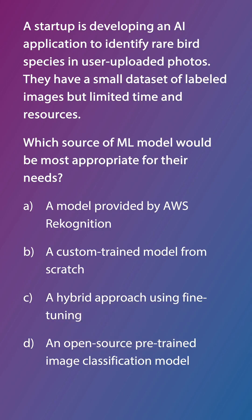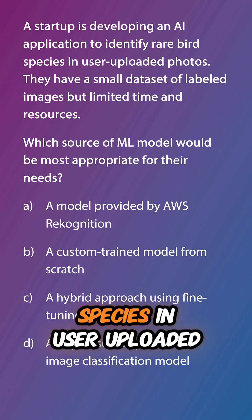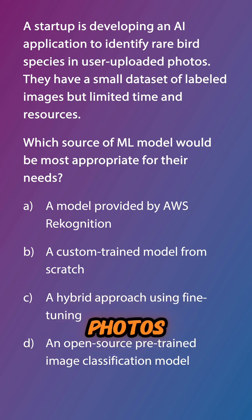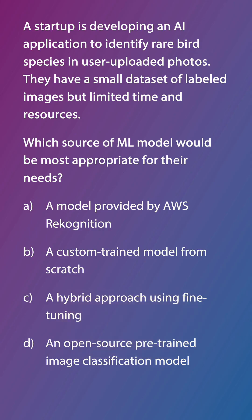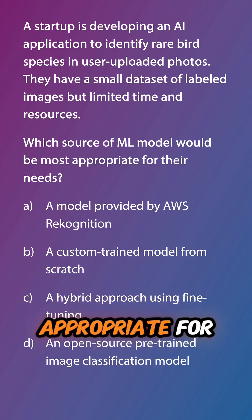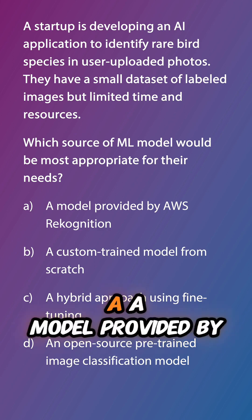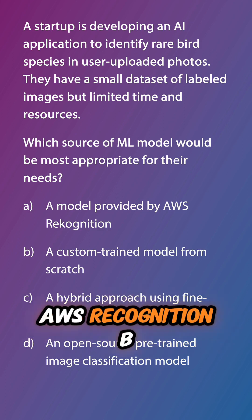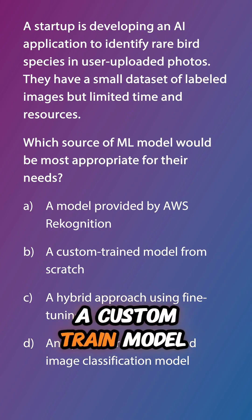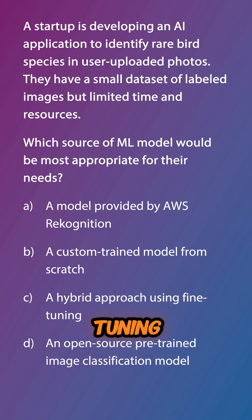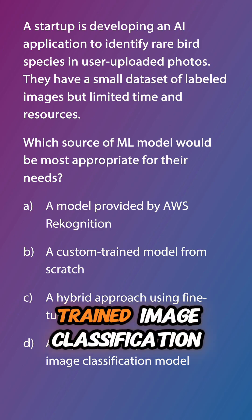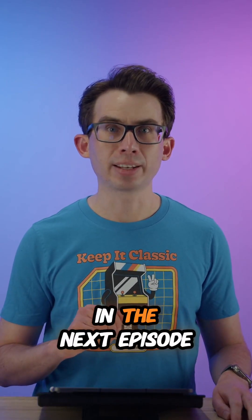Let's do a review question. A startup is developing an AI application to identify rare bird species in user-uploaded photos. They have a small dataset of labeled images but limited time and resources. Which source of ML model would be most appropriate for their needs? A: a model provided by AWS Rekognition. B: a custom trained model from scratch. C: a hybrid approach using fine tuning. Or D: an open source pre-trained image classification model. Post your answer into the chat and we'll review it in the next episode.